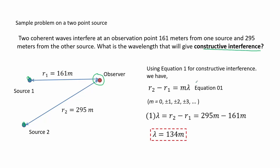We draw the problem and use equation 1 to determine at the point of the observer a constructive interference from these two sources.